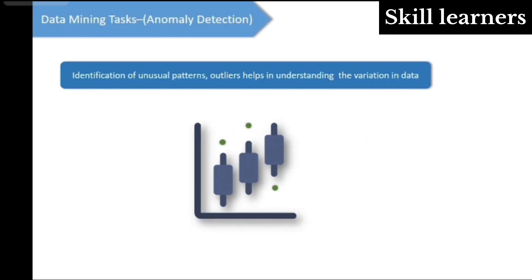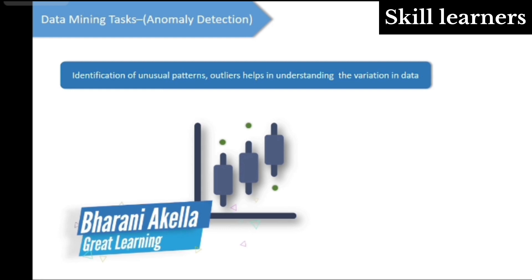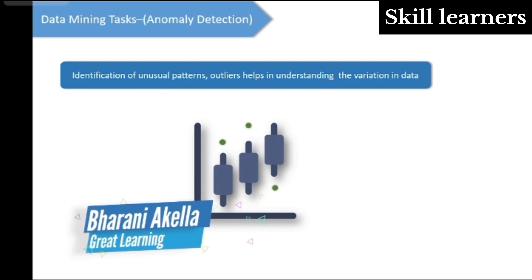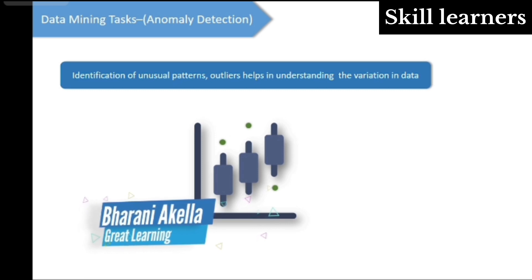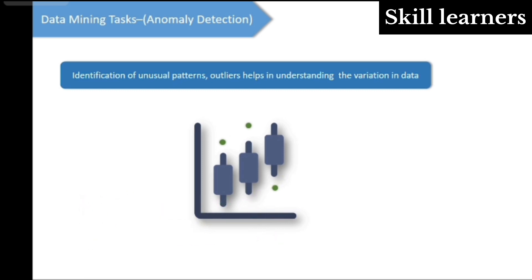Now that we've understood the entire data science life cycle, let us actually look at some interesting tasks of data science or data mining. Let's start off by understanding anomaly detection. Anomaly detection is just identification of unusual patterns or outliers in the data which we have. This anomaly detection actually comes under the data pre-processing stage.